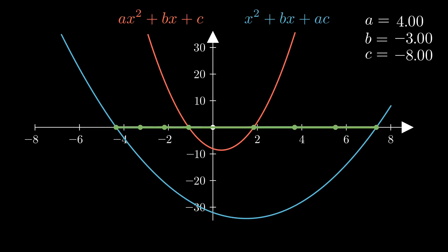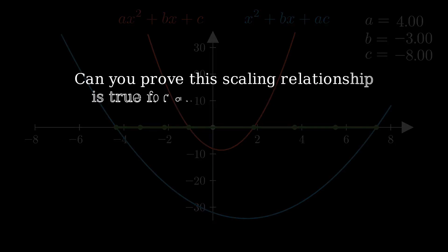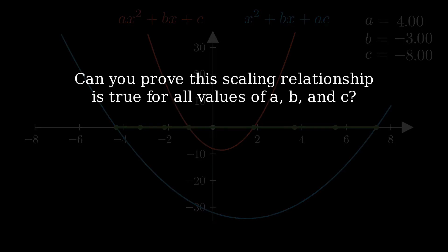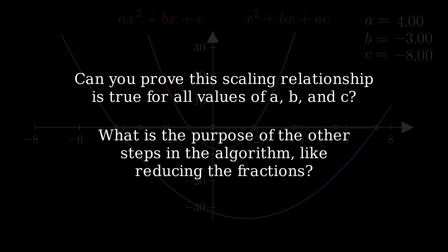There are a few threads that I've purposefully left hanging loose here. First and foremost, I haven't proved that this scaling by A relationship always happens, for any values of A, B, and C. To do that, we'd need to go back to the algebra, and since this video is already getting a bit long, I'll just leave a hint in the video description about how you can do that yourself. I also haven't really talked about the steps at the end of the algorithm, like reducing the fractions, but again, I'll leave that as something for you to think about on your own.